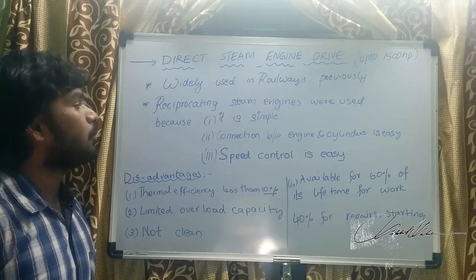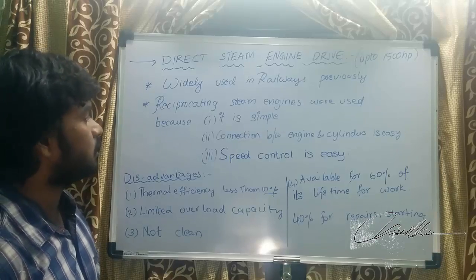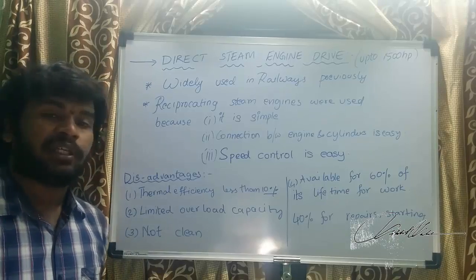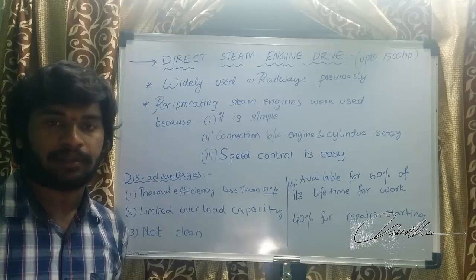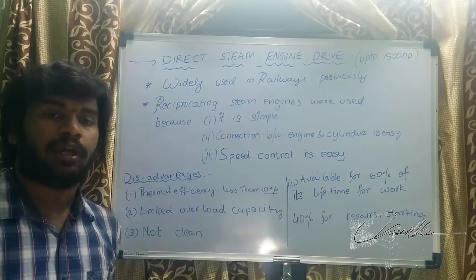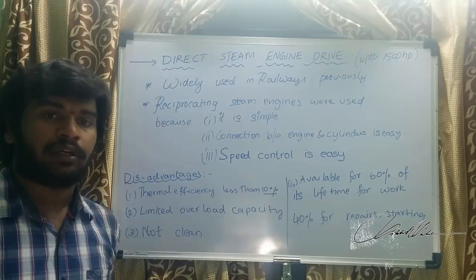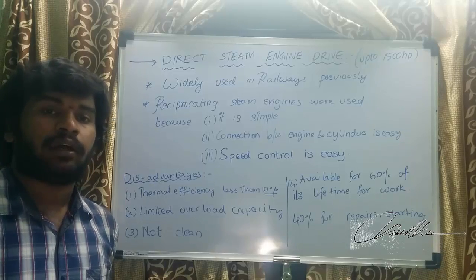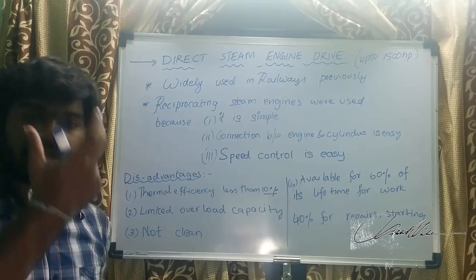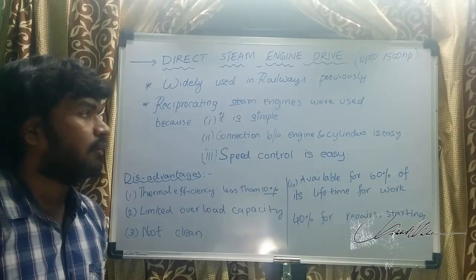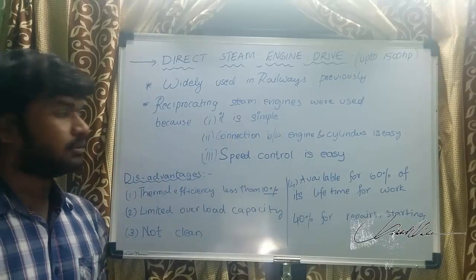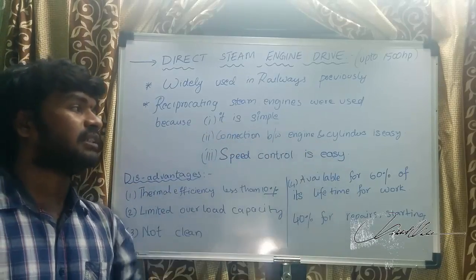Reciprocating steam engines were used. Steam engines are of two types: rotating engines, which are turbines, and reciprocating engines, like IC engines, which have a cylinder and piston that reciprocates. Using reciprocating engines means the connection between engine and wheels is simple, and speed control is easy.